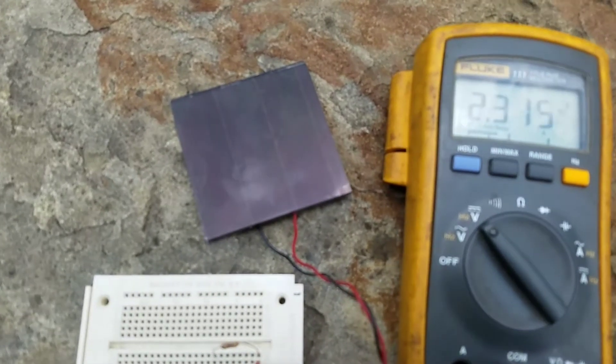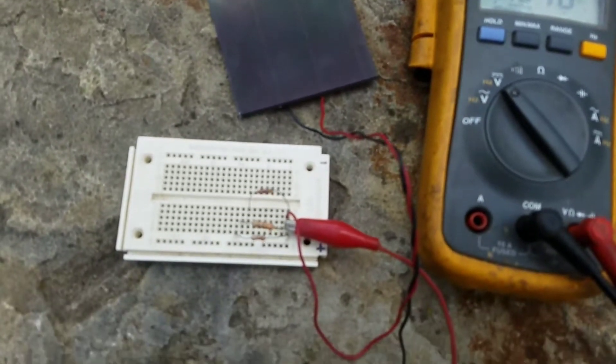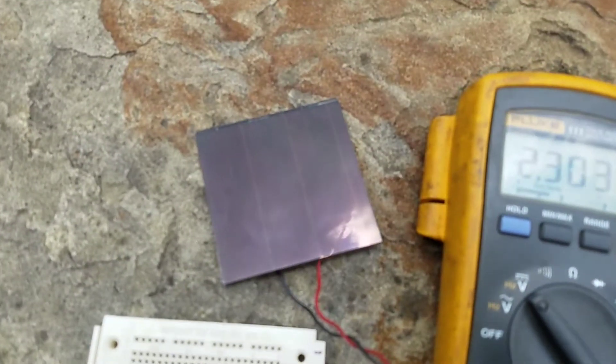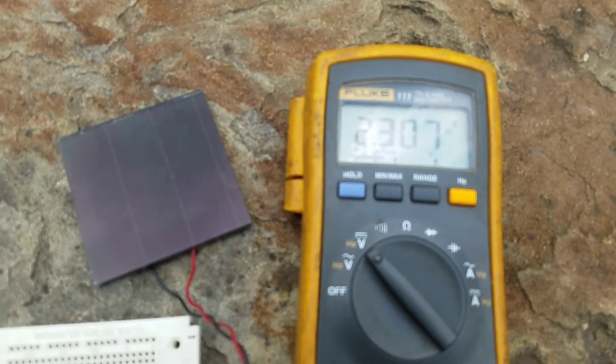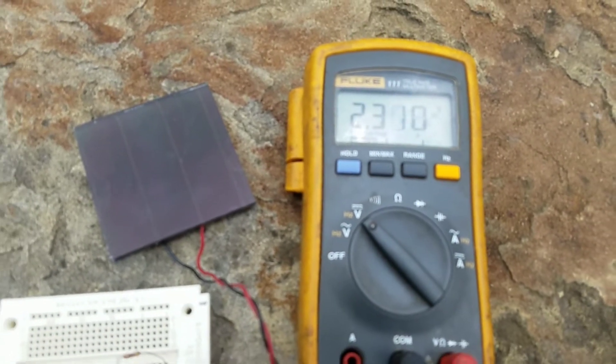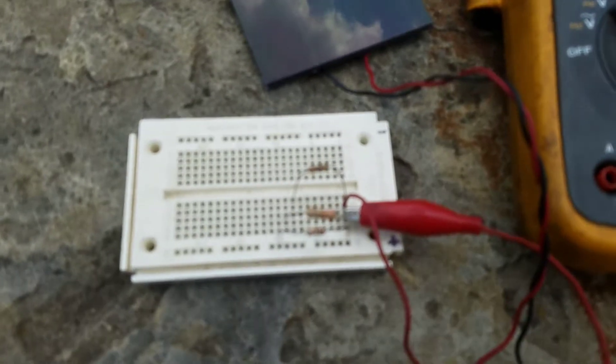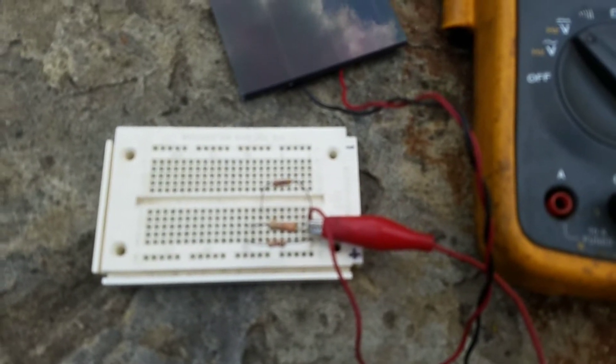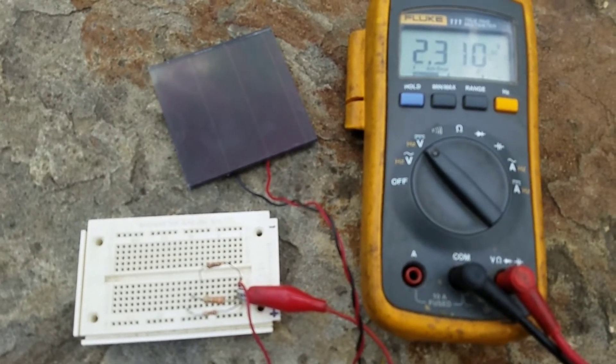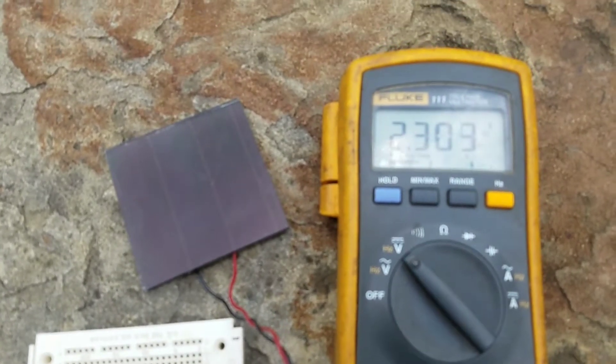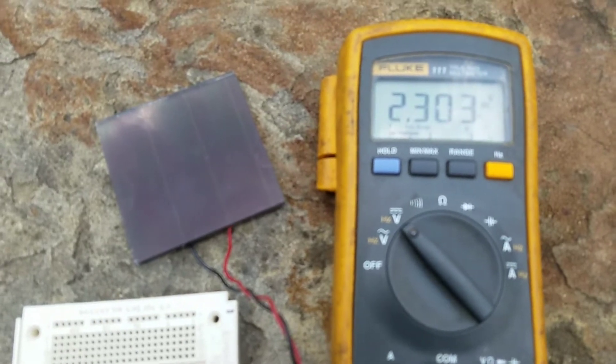So with the solar panel changing its voltage like this, how would you know if the solar panel will give out enough voltage for whatever application you have in mind? Because depending on what equivalent resistance your load or your device has, then the output is going to change.